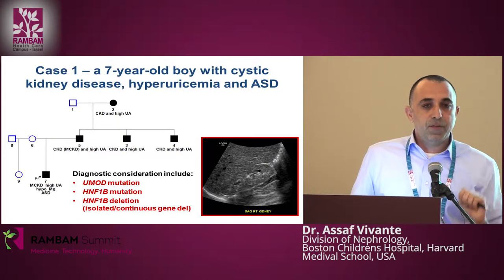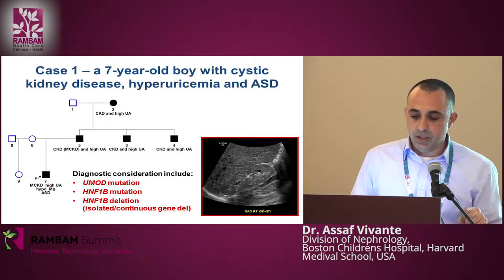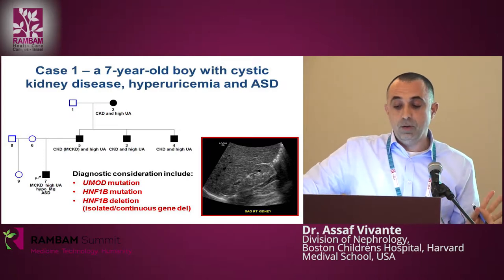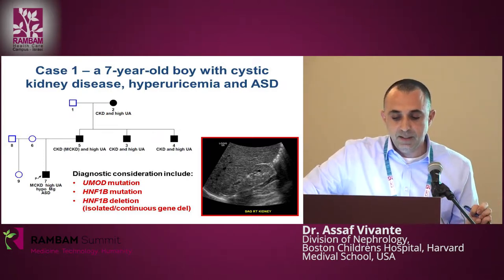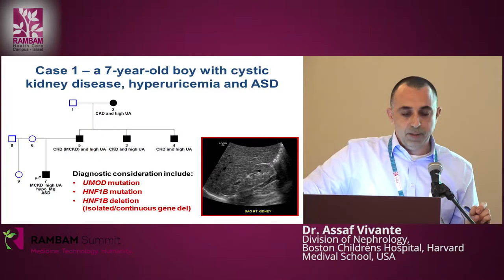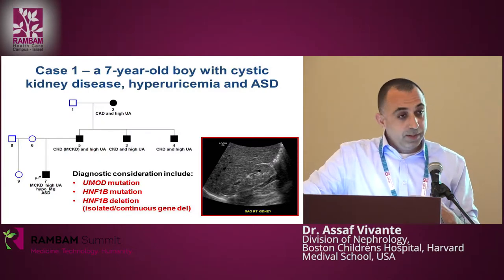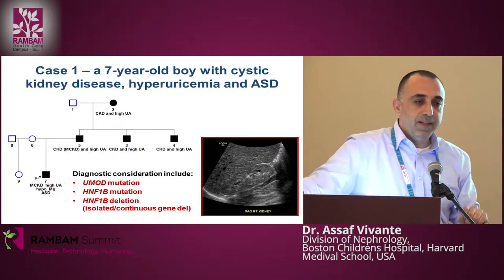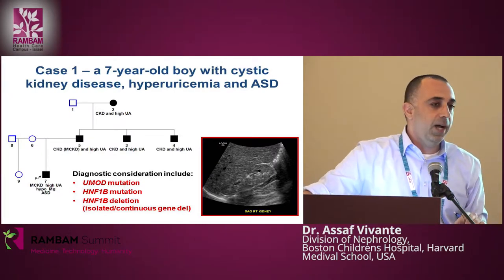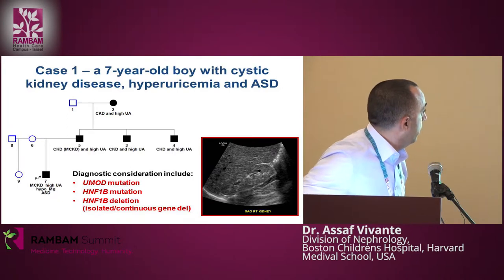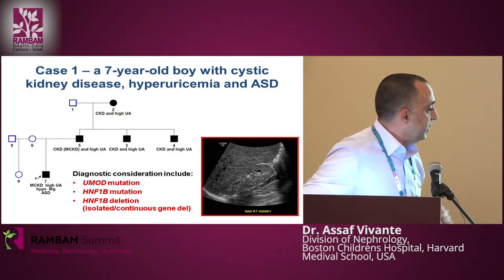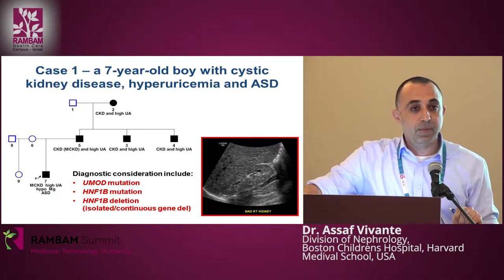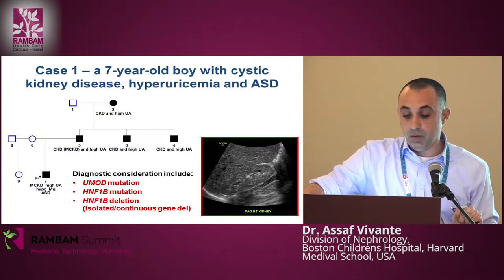This is a case of a child I've been following in the general young clinic in Children's. He's a seven-year-old boy followed for cystic kidney disease, hyperuricemia, and autistic spectrum disorder. When we looked at the pedigree and got his family history, the mother told us that the father has CKD of unknown cause, he has two other siblings with CKD of unknown cause, and the paternal grandmother also has CKD of unknown cause.